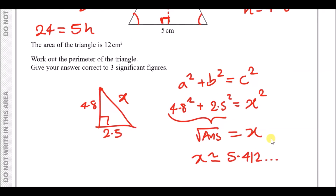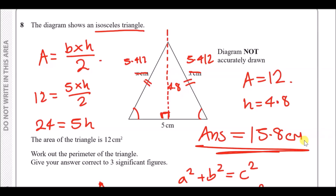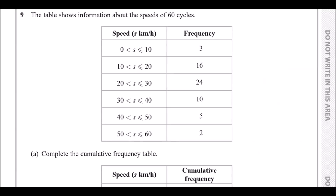Now we have x ≈ 5.412. To find the perimeter, add up all the lengths around the triangle: two slanted sides (each x) plus the base of 5. In the calculator, double your stored answer by 2 then add 5. To three significant figures the perimeter is approximately 15.8 centimetres.